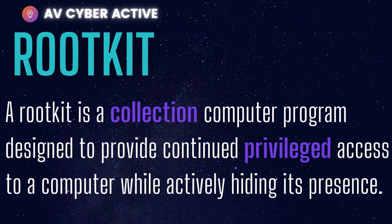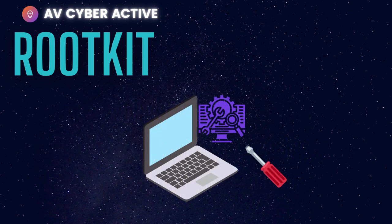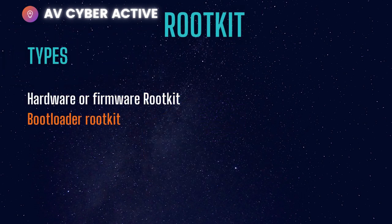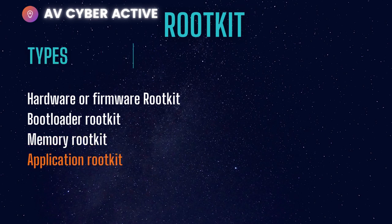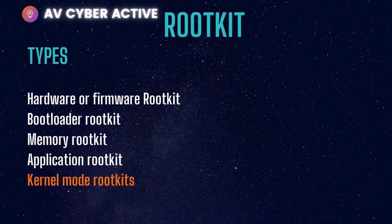Next, what's a rootkit? A rootkit is a collection of computer programs designed to provide continued privileged access to a computer while actively hiding its presence. There are many types of rootkits: hardware or firmware-based rootkits, bootloader rootkits that load when you boot your system, memory-based rootkits that run on RAM, application-based rootkits that replace standard computer files, and kernel mode rootkits, which are perhaps the most dangerous — they boot up and run with your operating system.